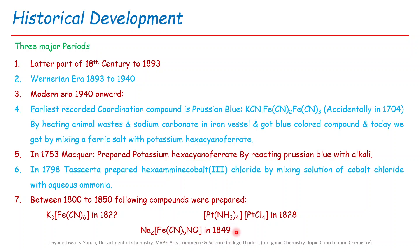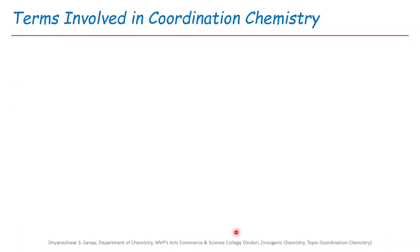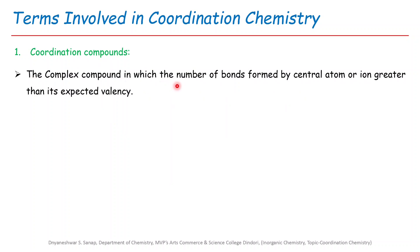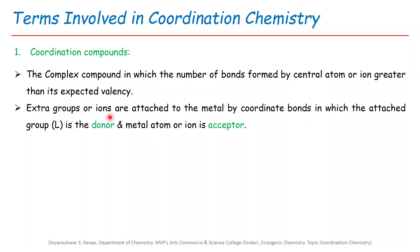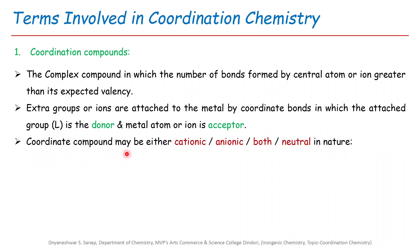Now let us move to the basic terms involved in coordination chemistry. The first important term is coordination compound. A complex compound in which the number of bonds formed by the central atom or ion is greater than its expected valency is called a coordination compound. Extra groups or ions are attached to the metal by coordinate bonds, in which the attached group — the ligand — is the donor atom, and the metal atom or ion is the acceptor. A coordinate compound may be cationic, anionic, both, or neutral in nature.